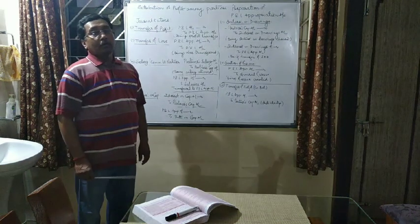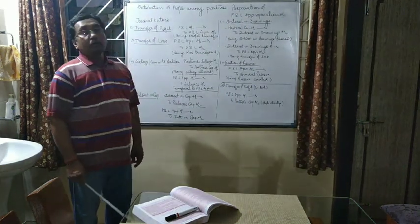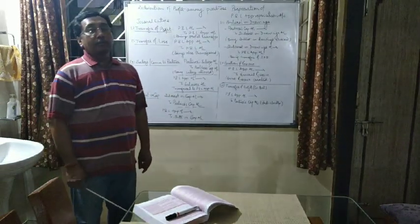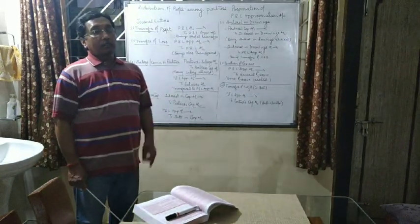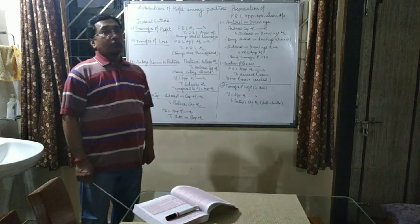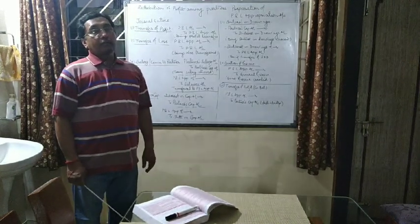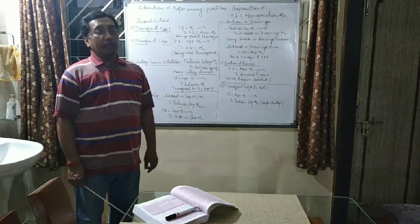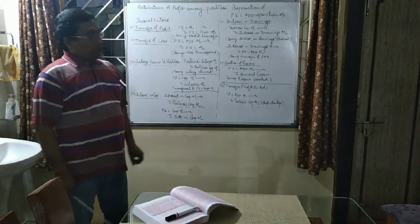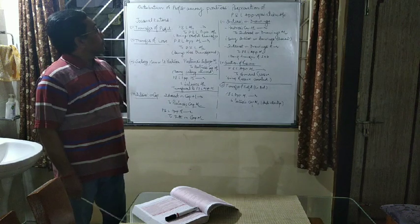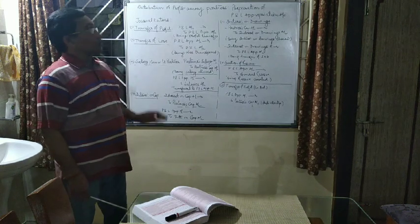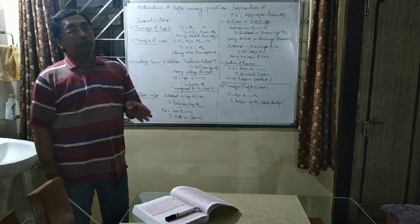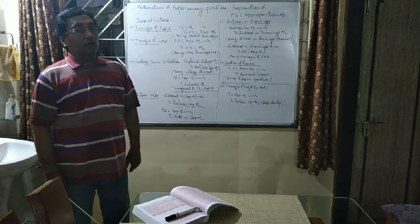In the last video, I had discussed about meaning and definition of partnership, essential characteristics of partnership, nature of partnership, partnership deal, and rules applicable in absence of partnership deal. In this video, we will discuss about distribution of profit among partners, that is preparation of profit and loss appropriation account.